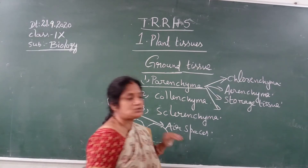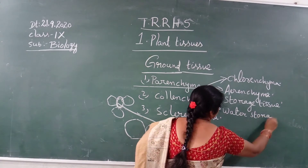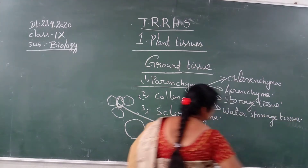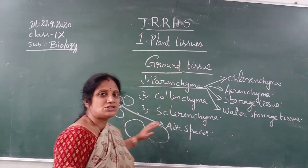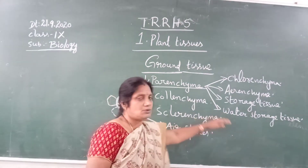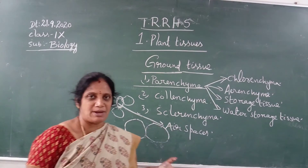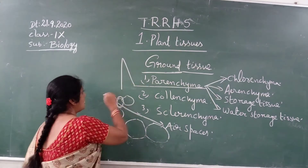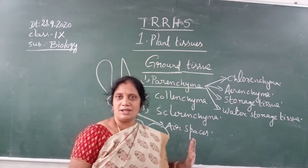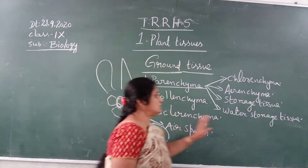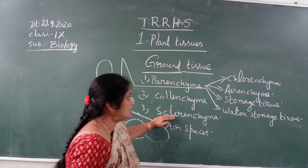The fourth type is called water storage tissue. Parenchyma cells which store water are called as water storage tissue. For example, desert plants such as aloe vera or cactus store water in their stems. That is why parenchyma, depending upon the function, is divided into these four types.